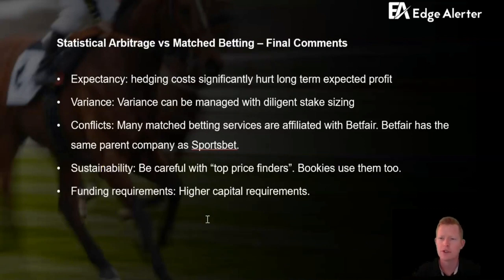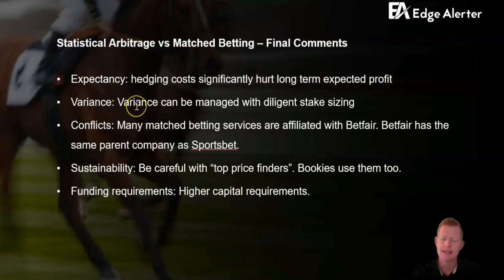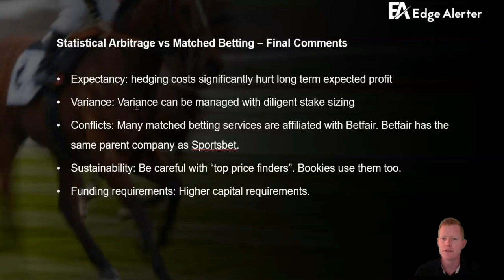To summarize the final comments: those mathematical examples show how significant the hedging costs are. Over the long run, the average matched bet is probably about 10–15% profit on turnover inferior to the statistical arbitrage approach. On variance: one of the most common justifications for matched betting is to manage variance, and while that's understandable — you're backing one place and laying another, capturing a spread — through diligent stake sizing you can manage variance without paying what is essentially an unnecessary insurance cost.